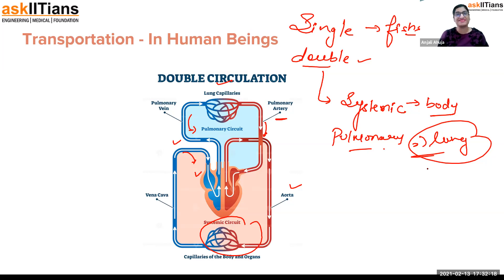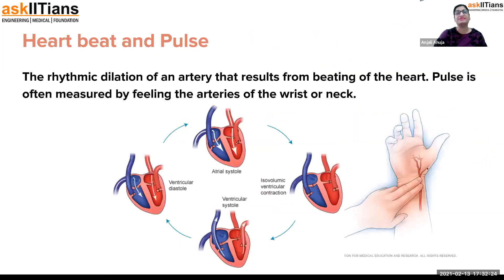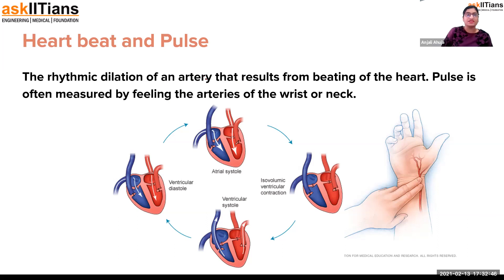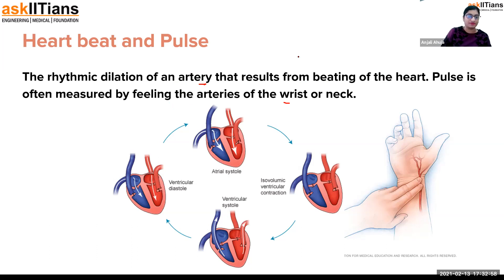Double circulation in the body is clear. Now let's move to the next topic: heartbeat and pulse. Check your wrist — you can feel blood flowing. This is related to the heart pumping, valves opening and closing. Heartbeat is the rhythmic dilation of the artery that results from the beating of the heart, and the pulse is often measured by feeling the artery of the wrist. This rhythmic dilation due to blood pressure is known as the cardiac cycle.